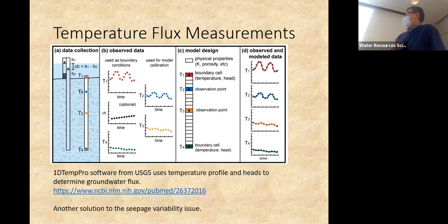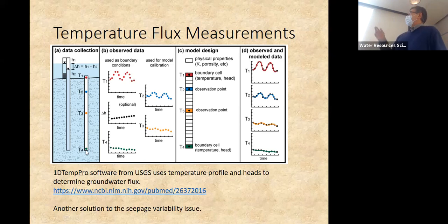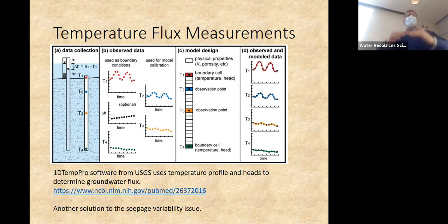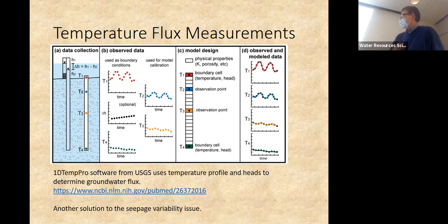About 10-20 years ago, Randy Hunt did some of the first work on temperature flux measurements. You put in a piezometer to confirm the direction of flow, then measure temperatures at the lake bed and at three depths over 48-72 hours or a week. The daily temperature fluctuates, and if we have downward flow, that carries the temperature signal downward. We can use those signals to determine how fast things are moving and get seepage. The USGS 1DTempPro software makes the analysis pretty easy.